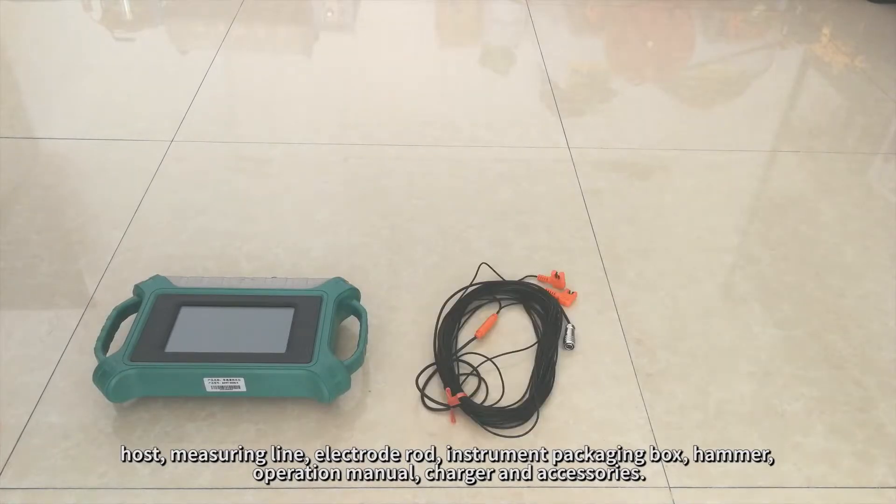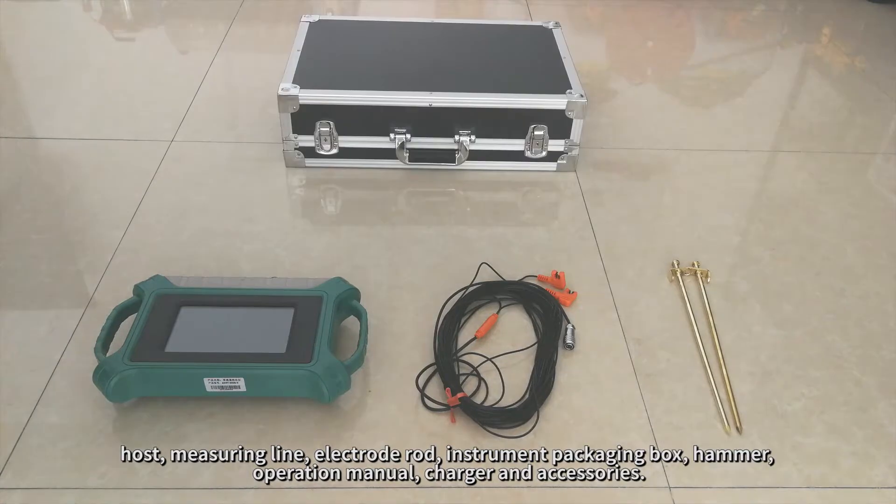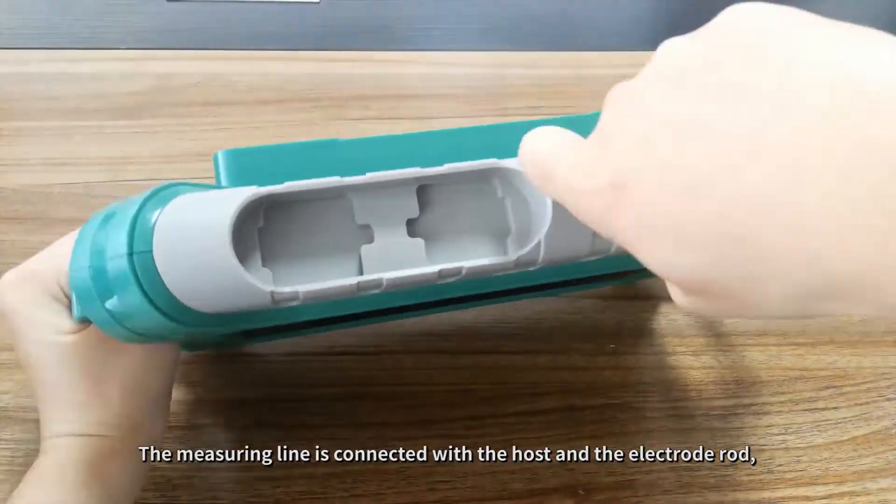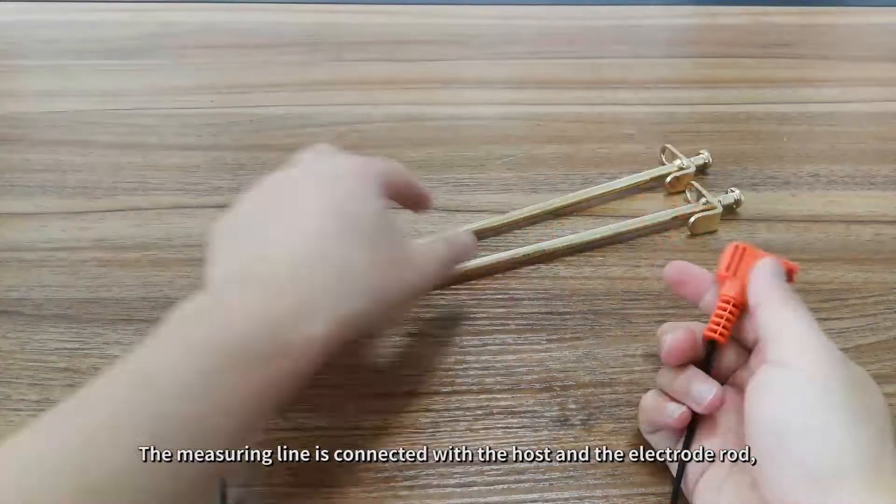Measuring Line, Electrode Rod, Instrument Packaging Box, Hammer, Operation Manual, Charger and Accessories. The measuring line is connected with the host and the electrode rod.